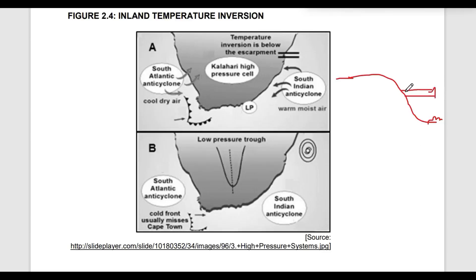If the temperature inversion is below the escarpment, that means we are in winter — that's the first proof. The second proof that sketch A is winter is that the Highveld high is dominantly in the interior of South Africa. The presence of the mid-latitude cyclone, the coastal low pressure, the South Indian and South Atlantic anticyclones diverging winds into the interior — this is characteristic of winter. So sketch A is winter.